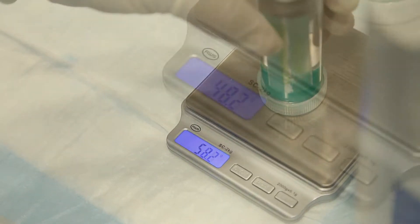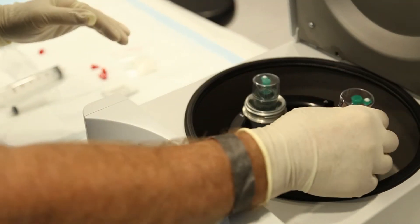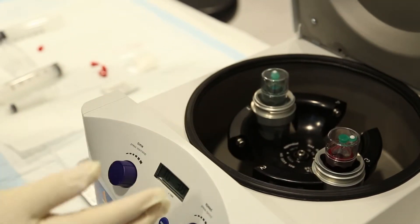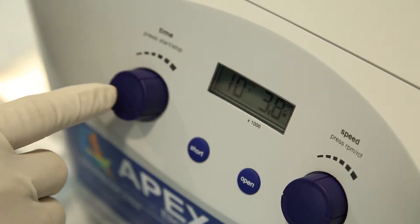Once the desired weight is accomplished, place the XL counterbalance and concentrating device on opposite ends inside the centrifuge. Close the centrifuge lid and spin your sample at 38 rpm for 10 minutes.